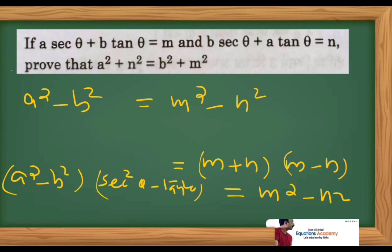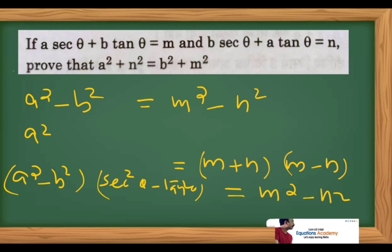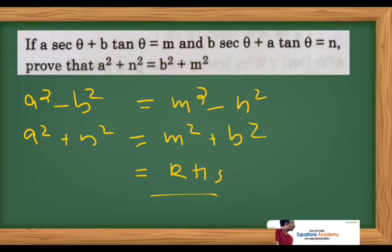We need to prove a² + n² = b² + m². From a² − b² = m² − n², rearranging: moving −n² to the left gives +n², and moving −b² to the right gives +b². So a² + n² = m² + b², which is equal to b² + m². Hence proved.